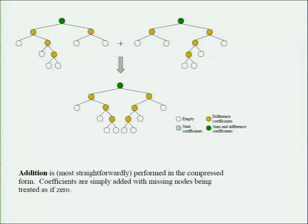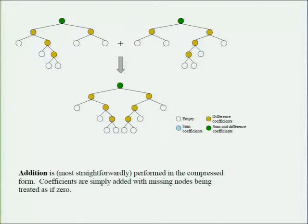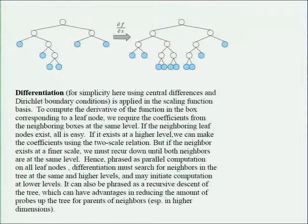Addition is a very simple operation — it basically computes the union of the two trees. You can do it in either compressed or reconstructed form, but it's easiest conceptually in the compressed form: we literally add coefficients together, treating a missing box as zero, and end up with the union of the two trees.